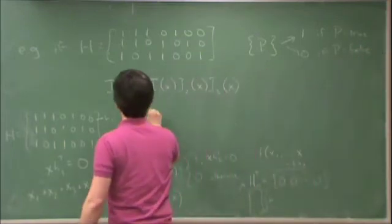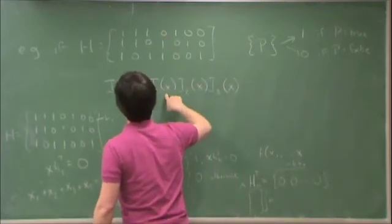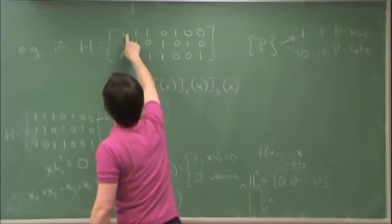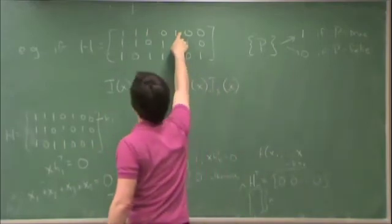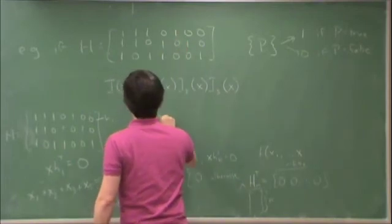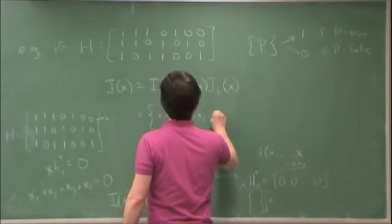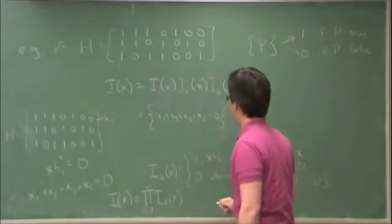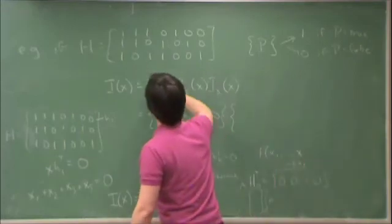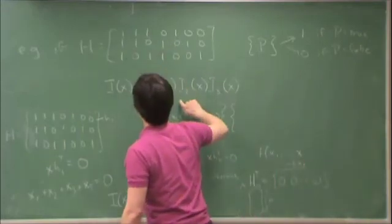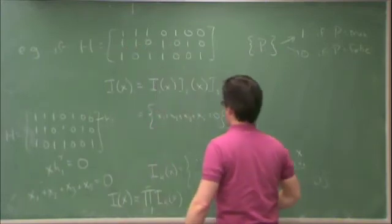So this is then equal to i1. What I need for this to be 1 is I need x1, x2, x3, and x5 mod 2 sum together mod 2 to be 0. Times i2, which requires x1, x2, x4, and x6 sum together to be 0.